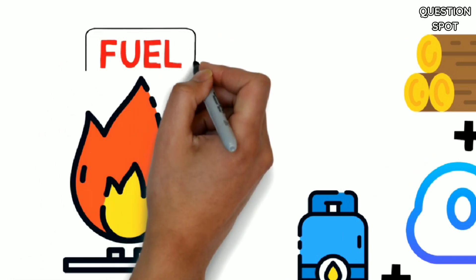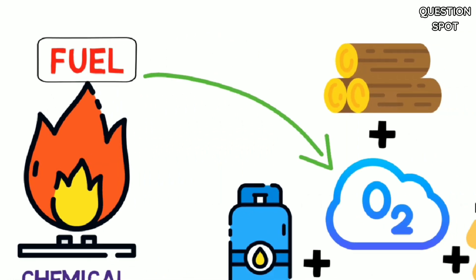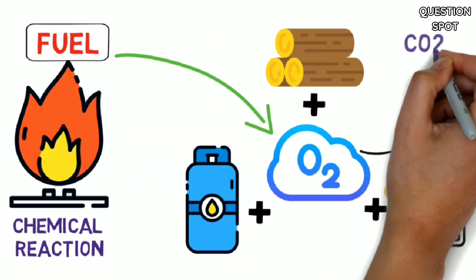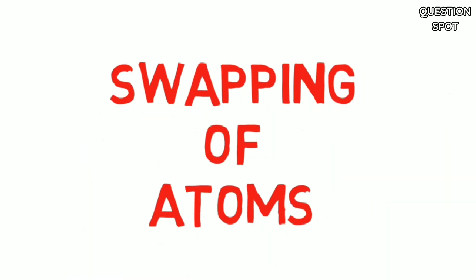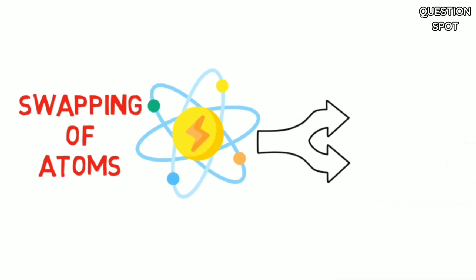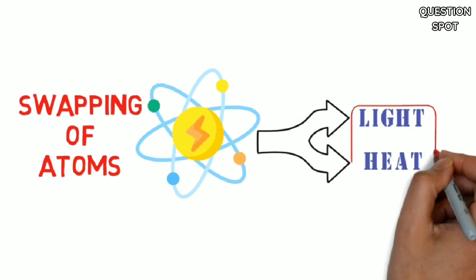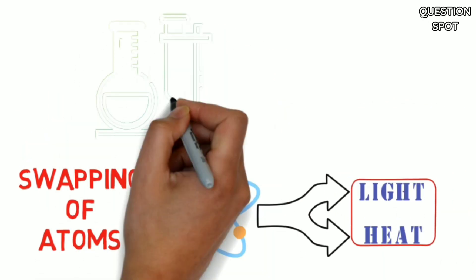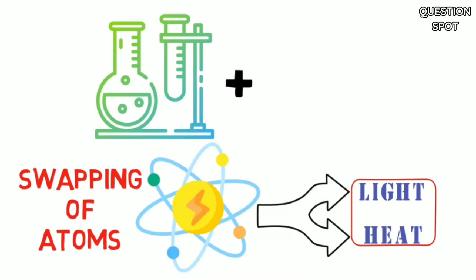When the molecules of fuel recombine with oxygen, other chemicals such as carbon dioxide and water are formed. This swapping of atoms releases a lot of the fuel's energy in the form of light and heat. The energy depends on the chemicals in the fuel and how quickly they combine with oxygen.